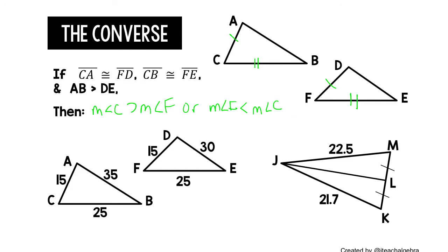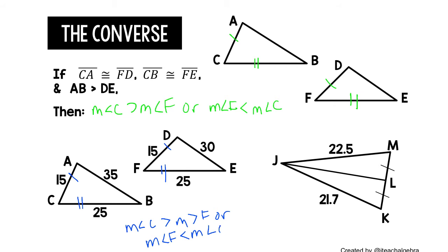Let's put this into practice. We've got AC and DF congruent, both at 15. We've got CB and EF congruent, both at 25. AB is 35 and DE is 30. Since AB is greater than DE, the measure of angle C is greater than the measure of angle F, or the measure of angle F is less than the measure of angle C.